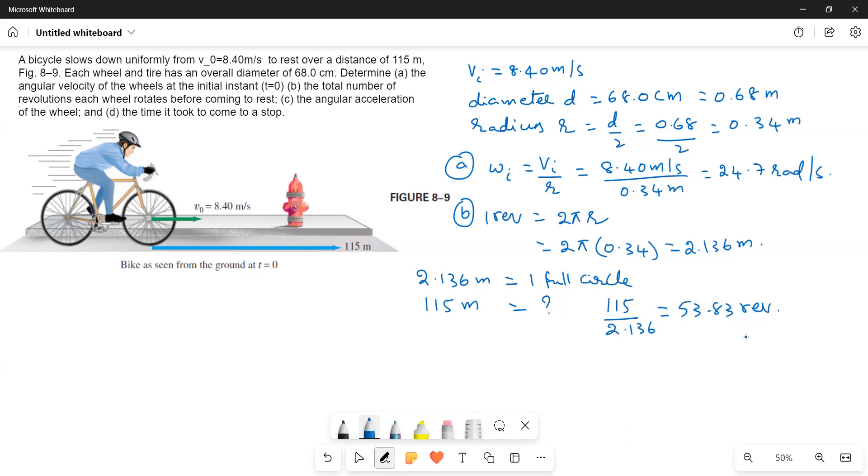Now we convert the revolutions into radians. One revolution equals 2π radians. Therefore, 53.83 revolutions = 53.83 × 2π, which gives the number of radians: 338.23 radians.